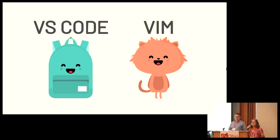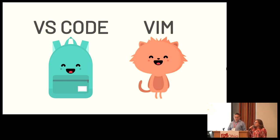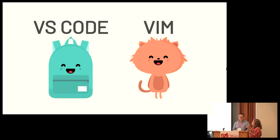Today we are comparing two different text editors. The first is Visual Studio Code, developed by Microsoft, which has a very rich graphical user interface. The second is Vim, a terminal window-based text editor that has been around for generations. We have two mascots for VS Code and Vim — a backpack and a cat — whose expressions will reflect how each editor performs on different features throughout the presentation.